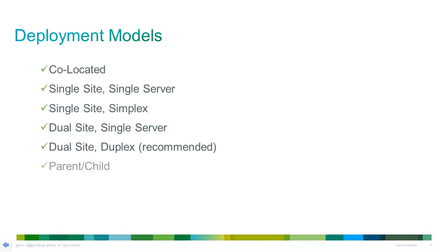The parent-child deployment model is typically a dual-sided duplex deployment at the parent site with discrete connections to each of the individual child administration and data servers. Each child will become a separate tenant within Unified CCMP. Firewalls should be used to separate the critical data from the user-facing web application servers and to prevent unauthorized access, although this is not mandatory.